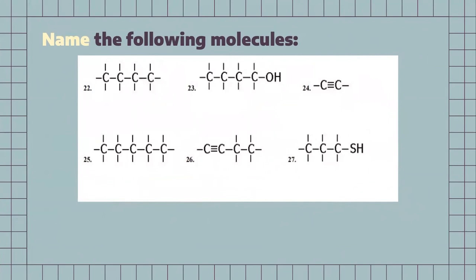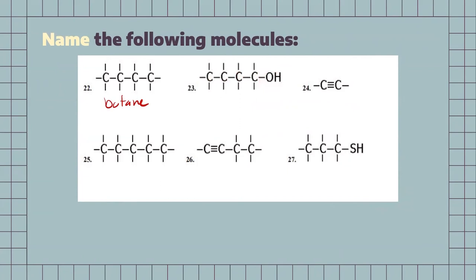Next one, 4-carbon chain fully saturated with hydrogens — simple alkane, butane, meaning 4 carbons. For the next one, we have 1, 2, 3, 4 carbons, so another form of butane. But because of the alcohol, we're going to call this one butanol. We're not attaching a number to this since it's going to be on the first carbon.